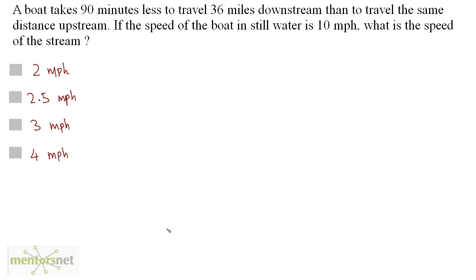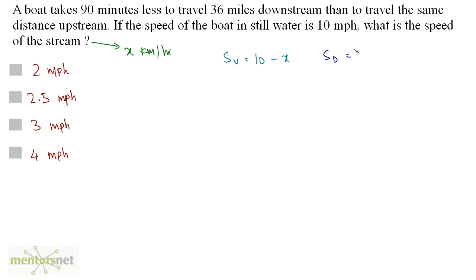A boat takes 90 minutes less to travel 36 miles downstream than to travel the same distance upstream. If the speed of the boat in still water is 10 miles per hour, what is the speed of the stream? Let the speed of the stream be x kilometers per hour. The upstream speed is 10 minus x, and the downstream speed is 10 plus x.